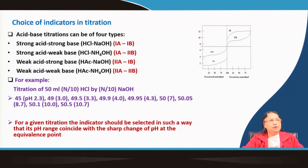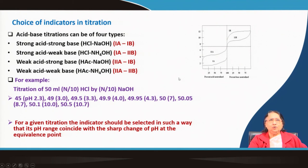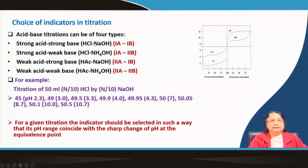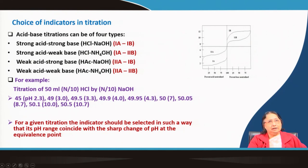For acid-base titrations there are four types: strong acid versus strong base (e.g., HCl vs. NaOH), strong acid versus weak base (e.g., HCl vs. ammonium hydroxide), weak acid versus strong base (e.g., acetic acid vs. NaOH), and weak acid versus weak base (e.g., acetic acid vs. ammonium hydroxide). You must choose the appropriate indicator for each type.